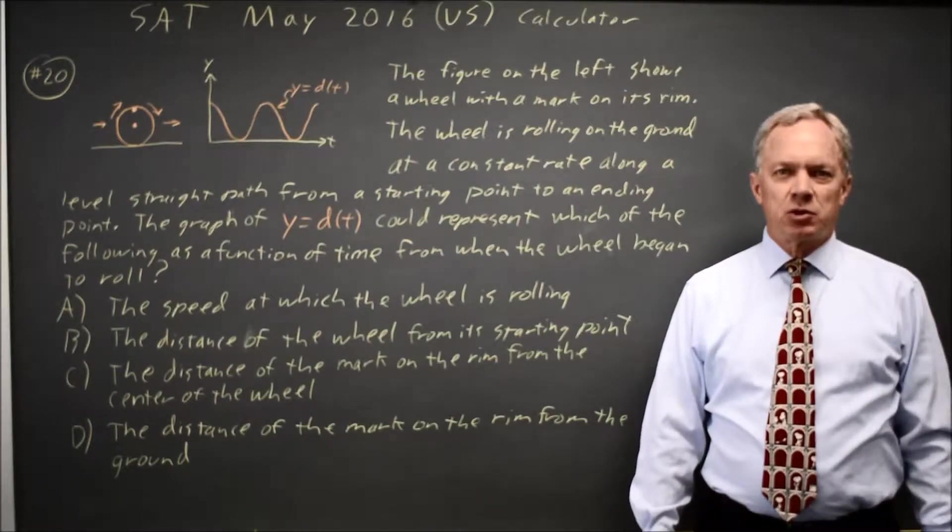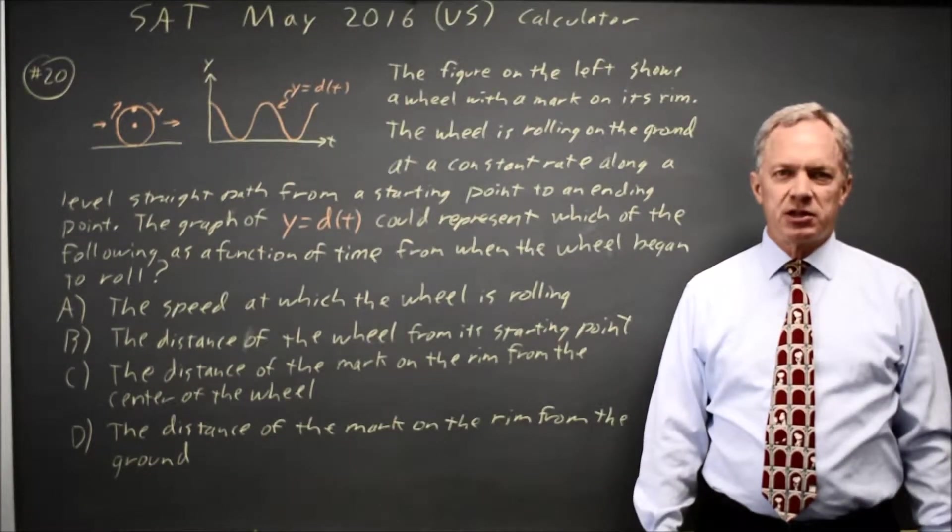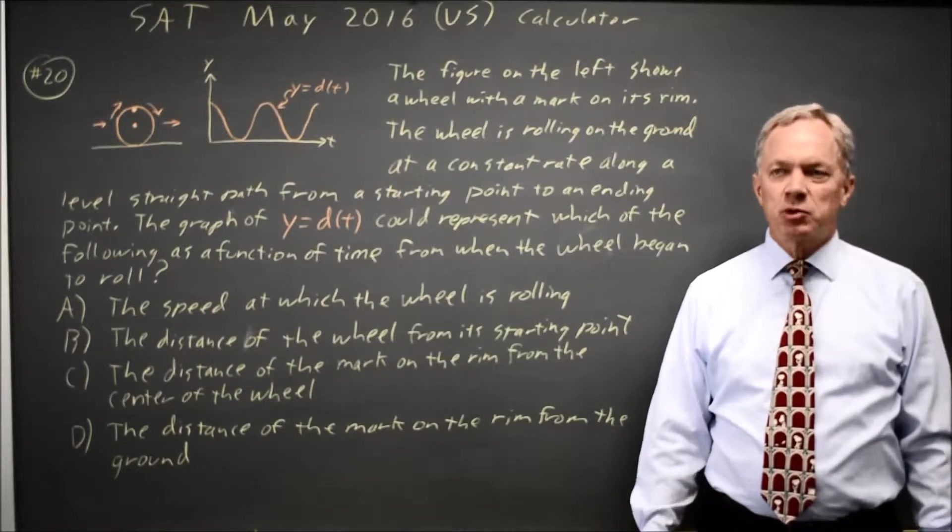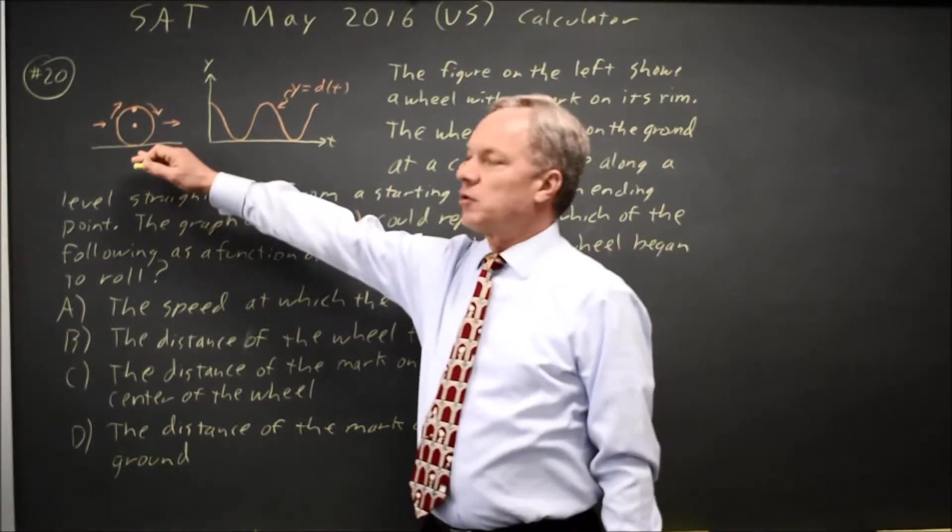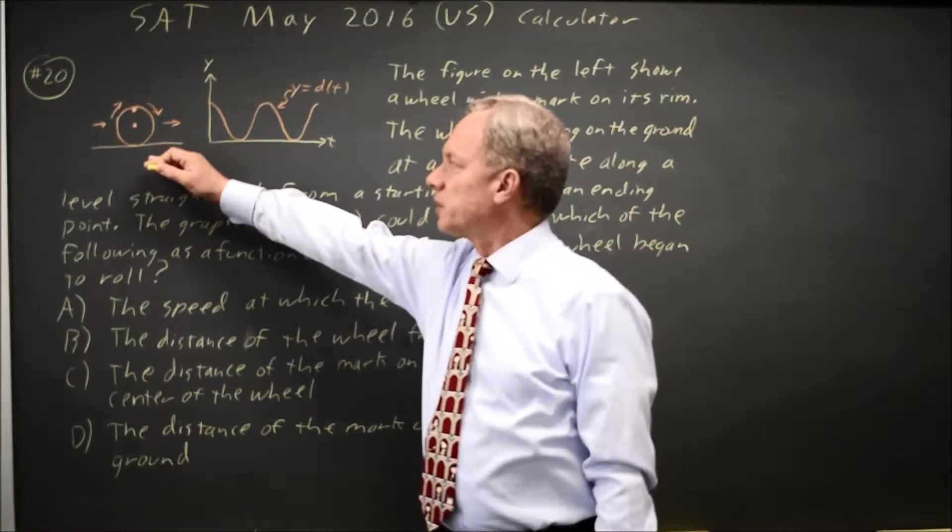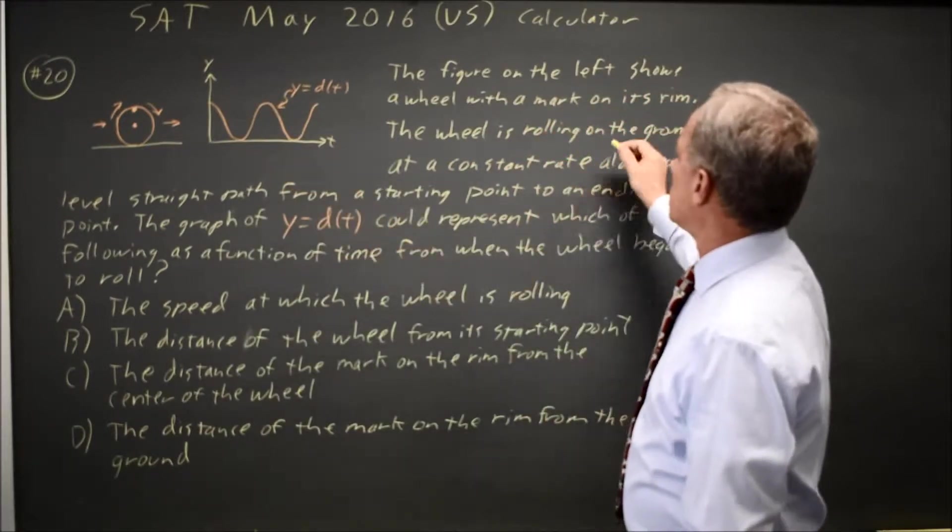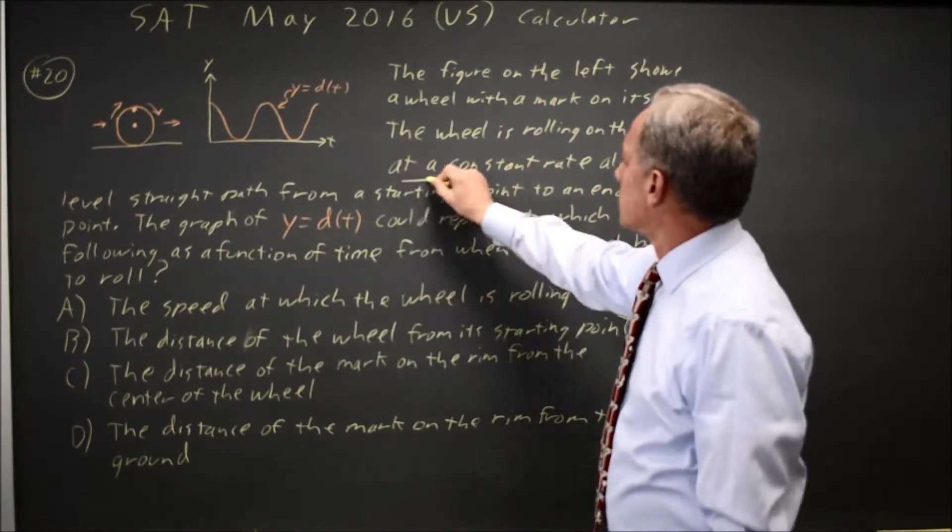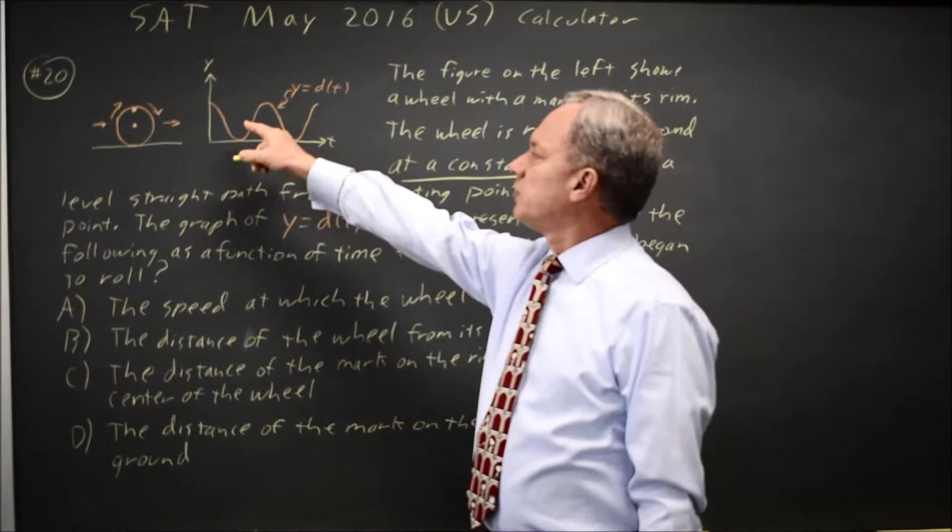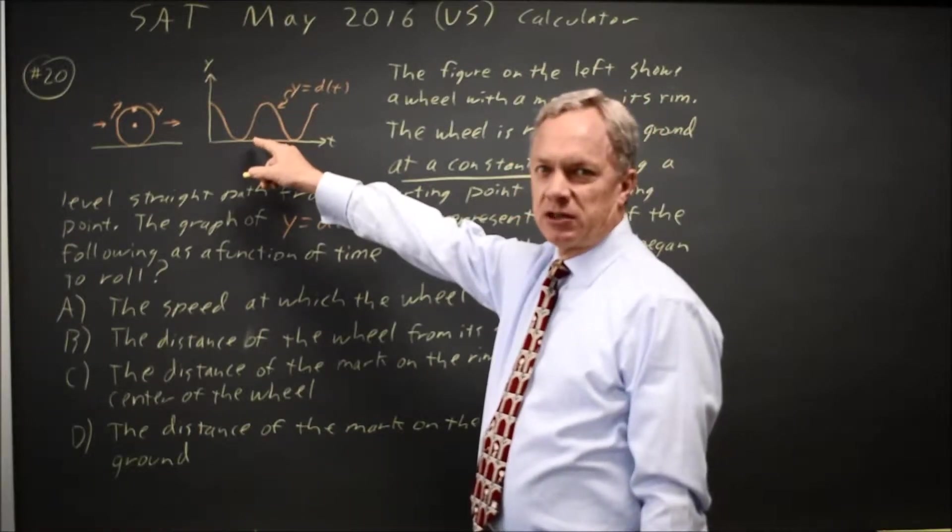This is calculator question number 20 from practice test 5. It's also May 2016 SAT. The College Board gives us a picture of a wheel rolling on the ground at a constant rate and a graph of some function d of t.